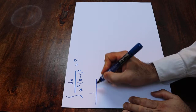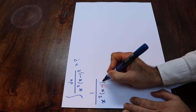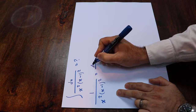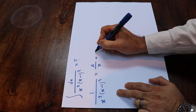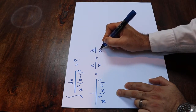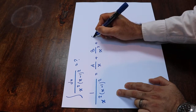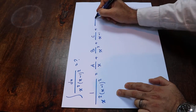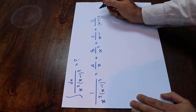you write 1 divided by x² times (x minus 1)² will be equal to A divided by x, plus B divided by x², plus C divided by (x minus 1), plus D divided by (x minus 1)².